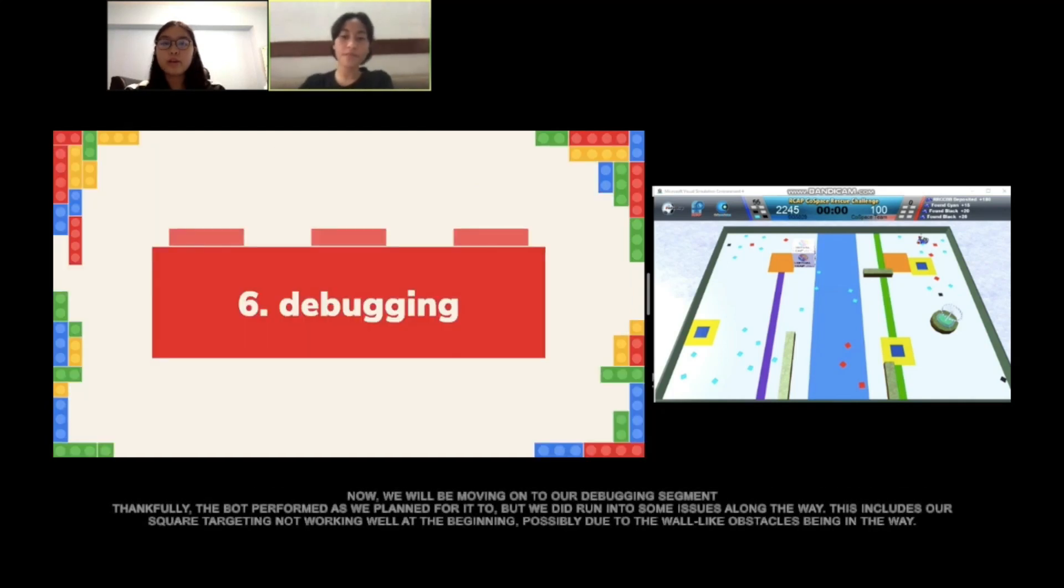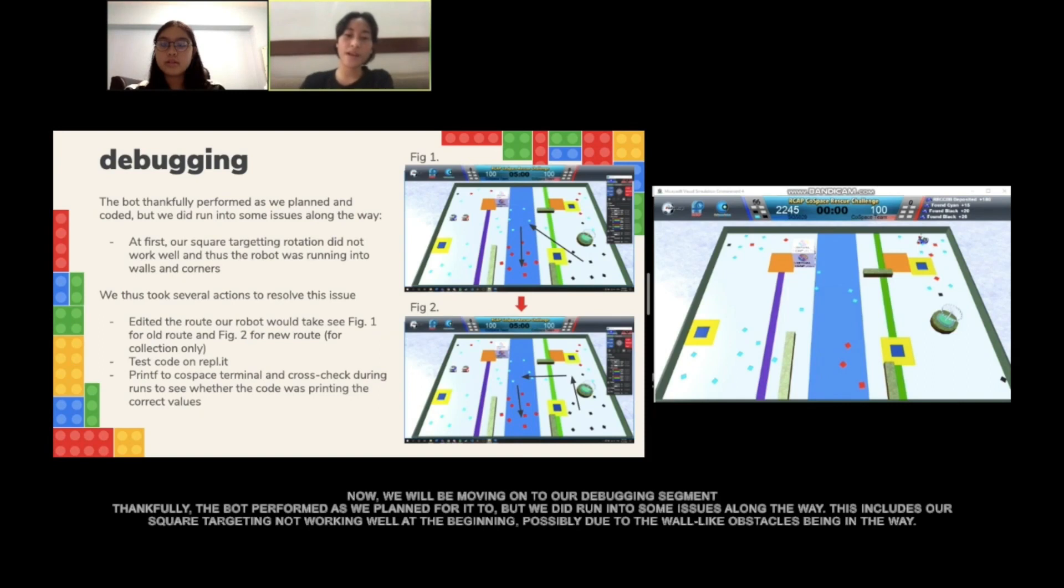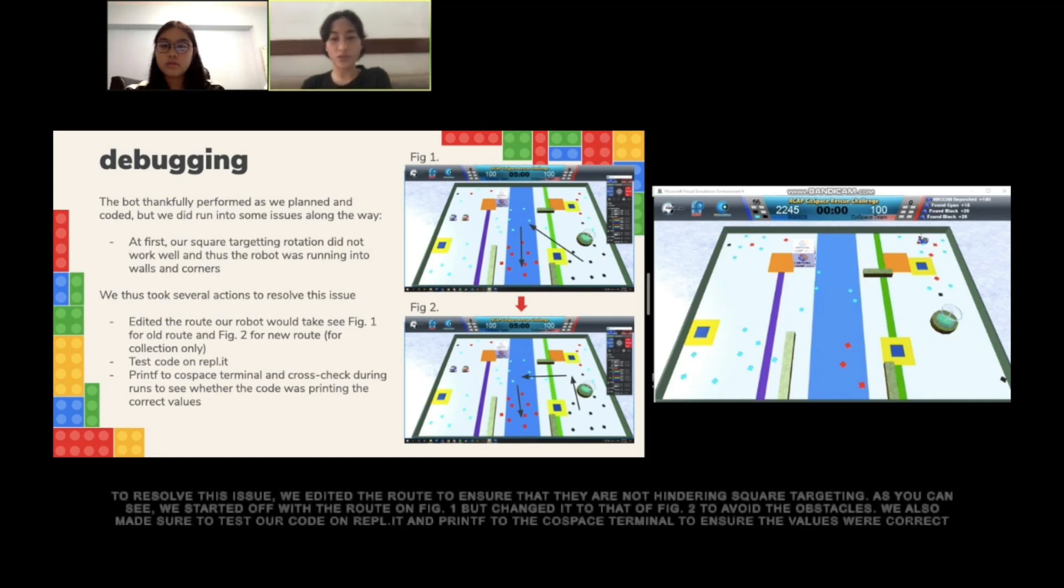Now we will be moving on to our debugging segment. Thankfully, the bot performed as we planned, but we did run into issues along the way. This includes our square targeting not working at the beginning, possibly due to the wall-like obstacles being in the way. To resolve this issue, we edited the route to ensure that they are not hindering our square targeting. As you can see, we started off with the route in figure 1, but changed it to the route of figure 2 to avoid the obstacles. We also made sure to test our code on Replit and switch to the Core Space terminal to ensure the values are correct.